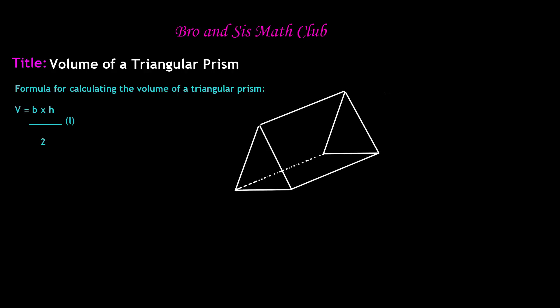A triangular prism is a three-dimensional shape, and volume is when we find out how much space a three-dimensional shape occupies. Here is an example of a triangular prism.